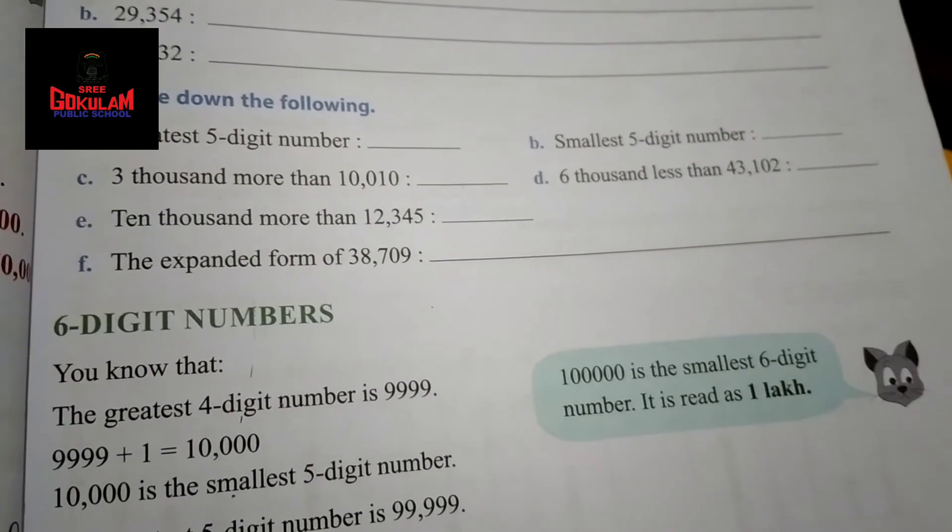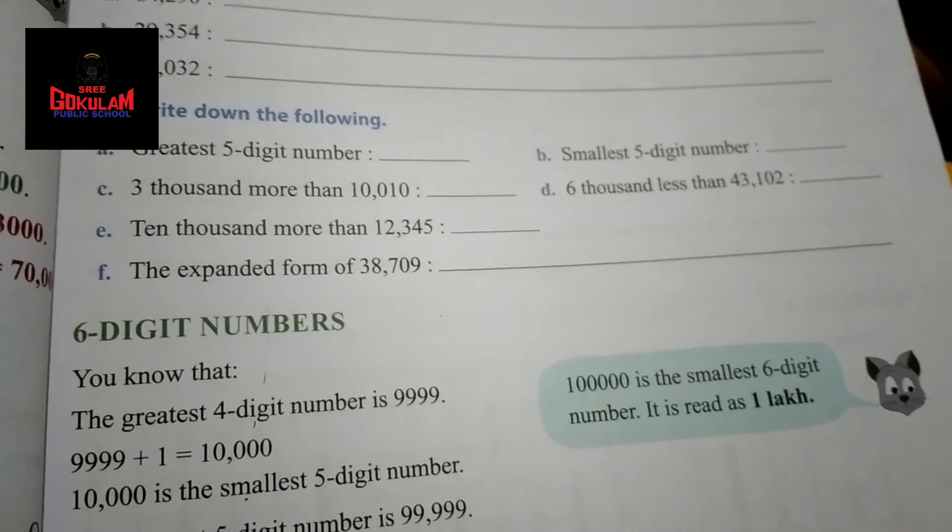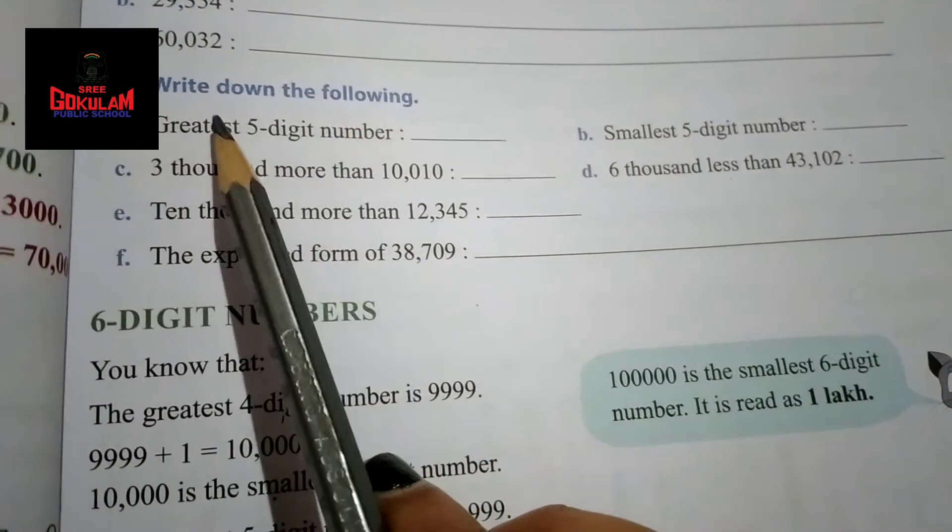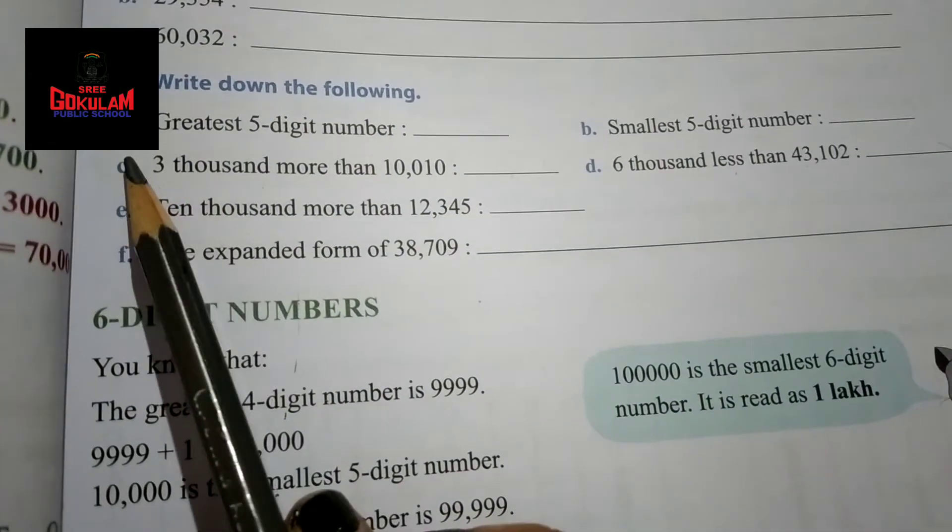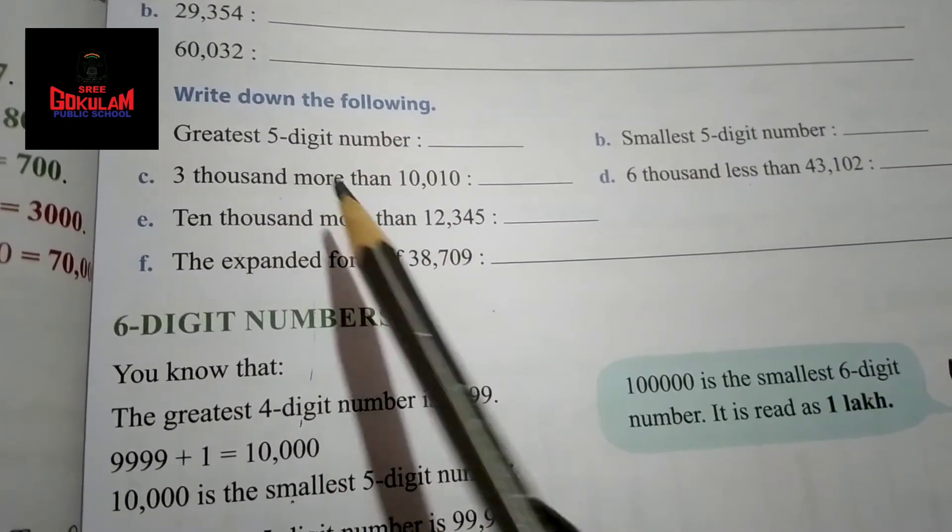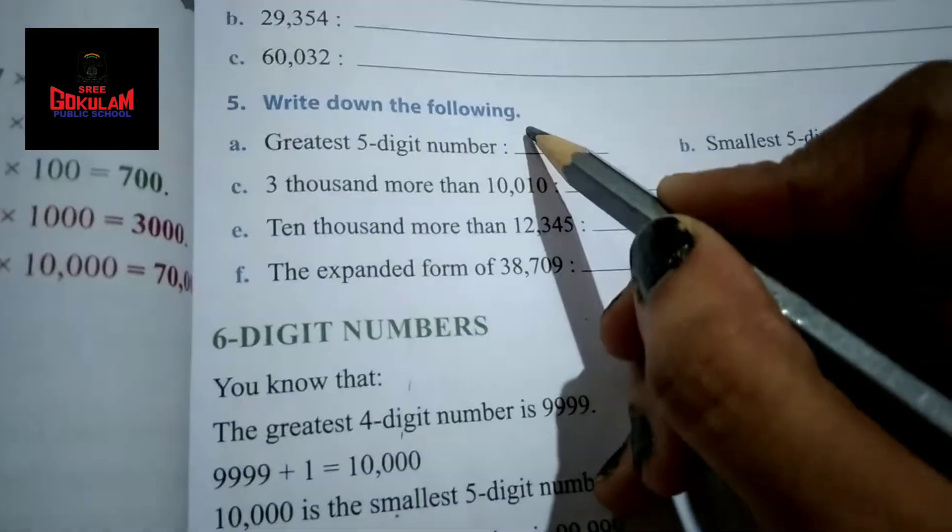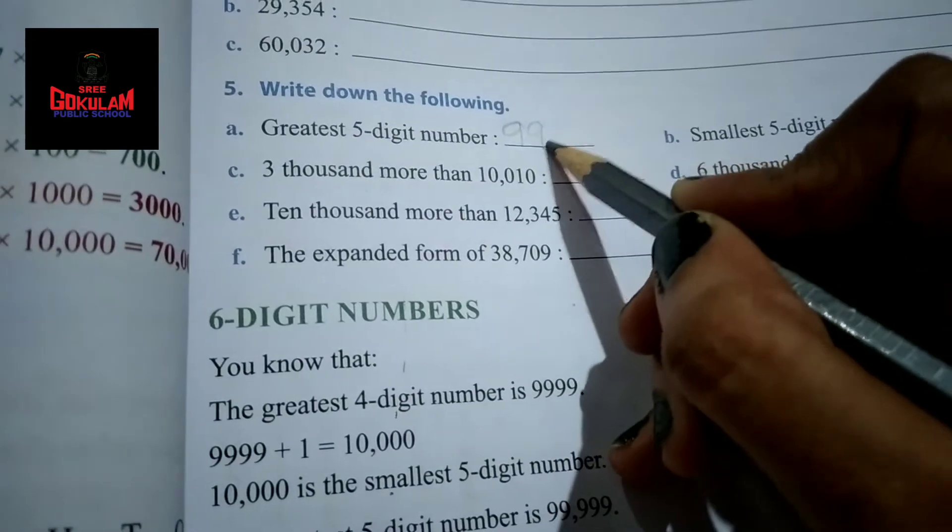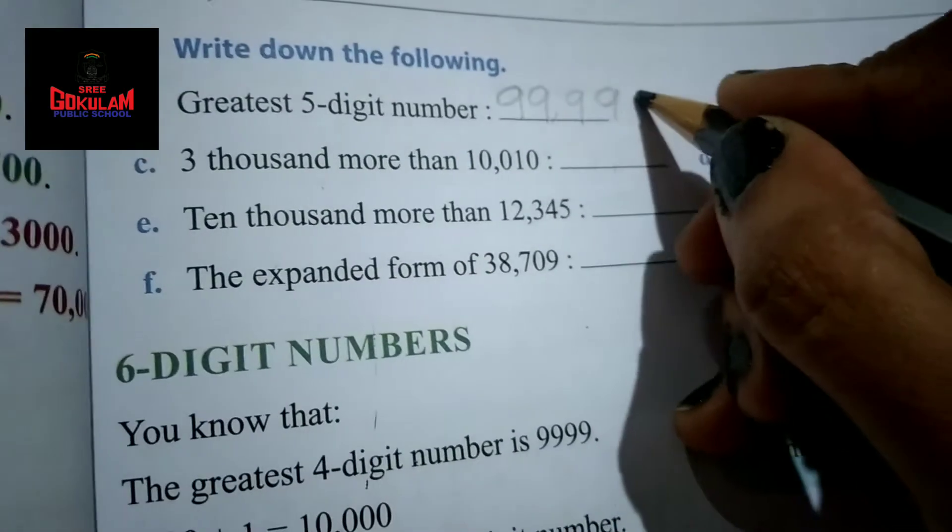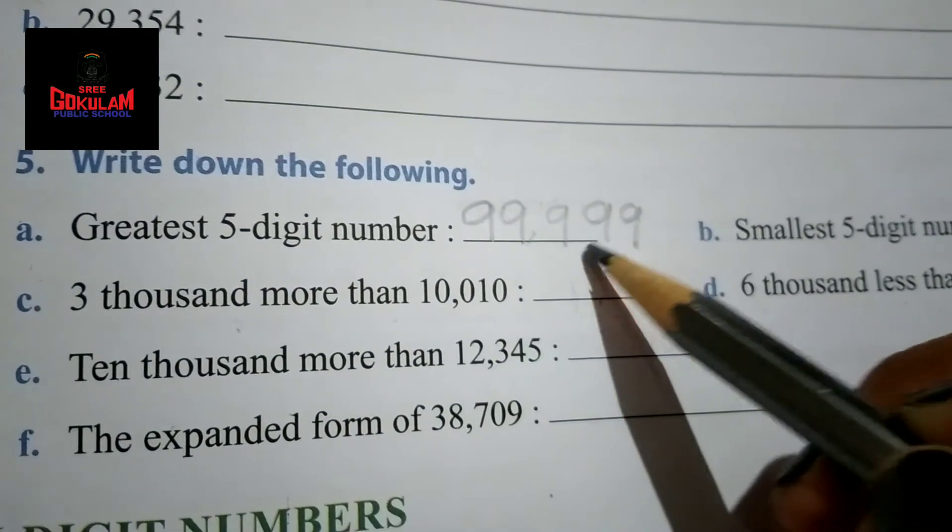Next we have to do some textbook activity. Textbook page number 5, Exercise 1, Question number 5. Write down the following. First question, question number A: Greatest 5-digit number. We know that the greatest 5-digit number is 99,999.